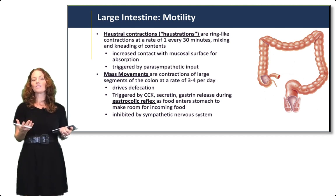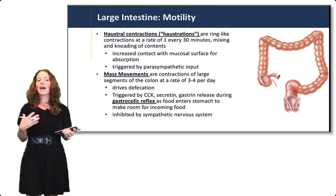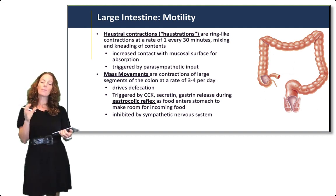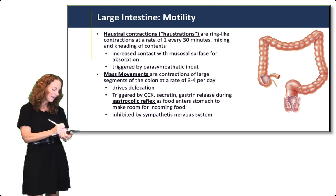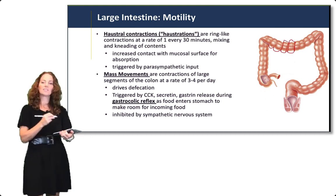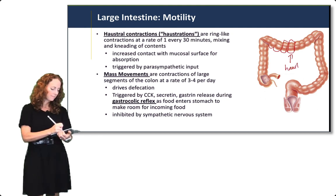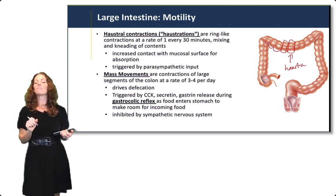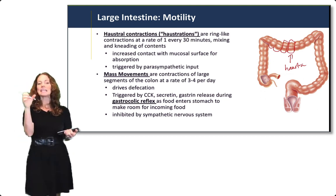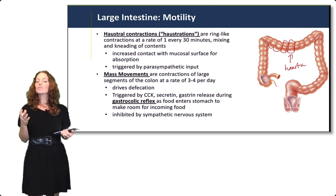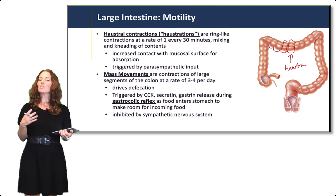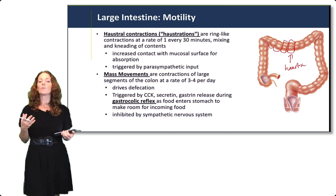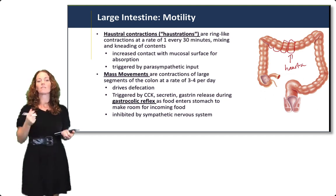The motility of the large intestine includes mass movements and haustral contractions. Haustra are the little pouches you see along the large intestine — those curving regions separating portions of the colon. Haustra can contract with ring-like contractions at a rate of about one every 30 minutes, helping to mix and knead the contents. They are triggered by parasympathetic input and help increase contact of the colon contents with the mucosal surface for absorption of water and electrolytes.